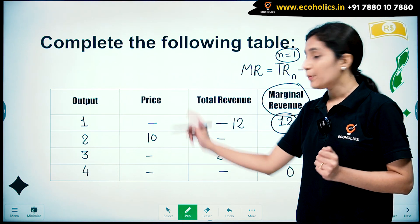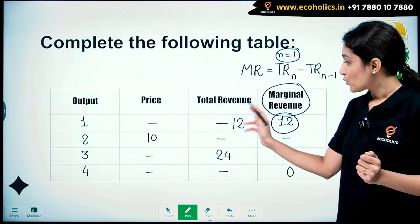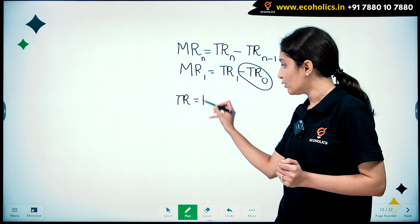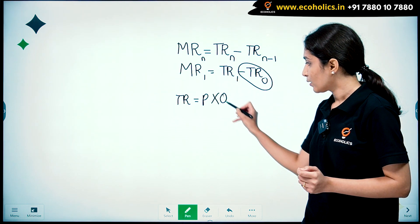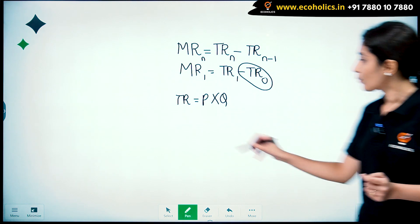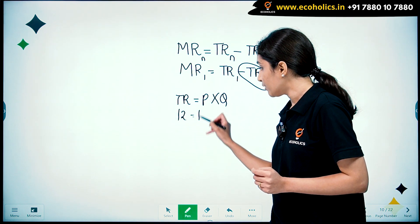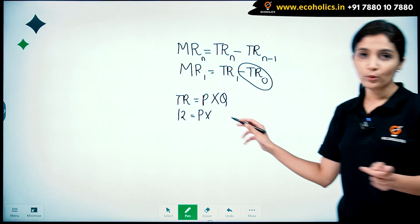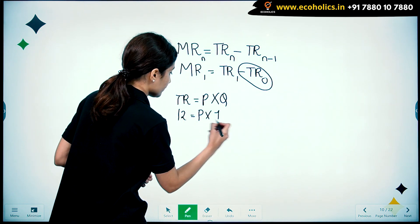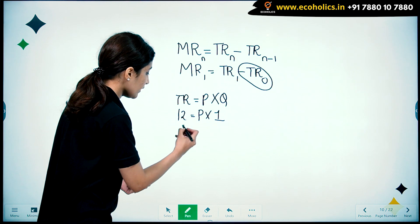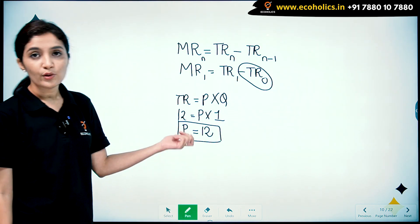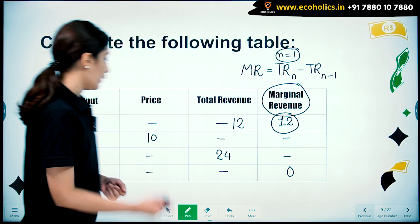Now coming on to price. Total revenue is given as 12. Using the formula total revenue = price × quantity, our total revenue is 12 and quantity is 1, so our price will be equal to 12. Both blanks are filled as 12.